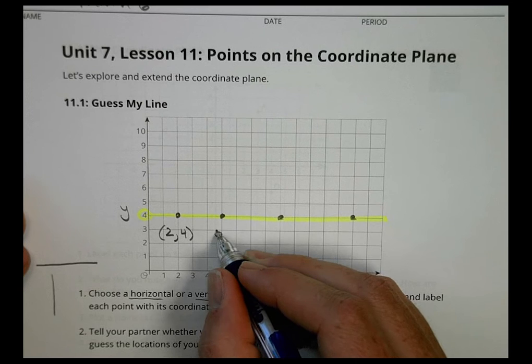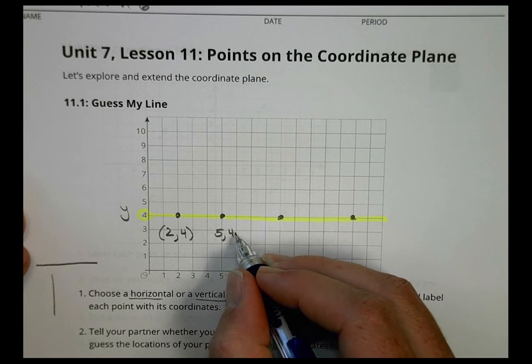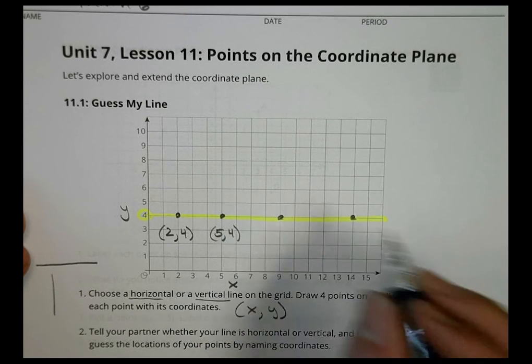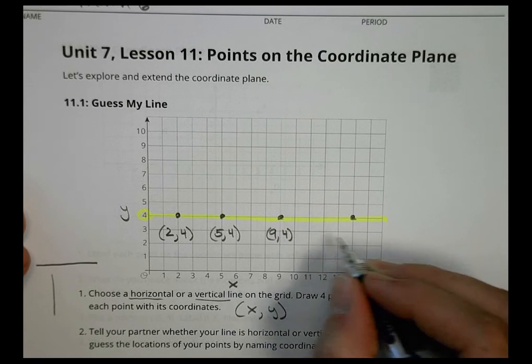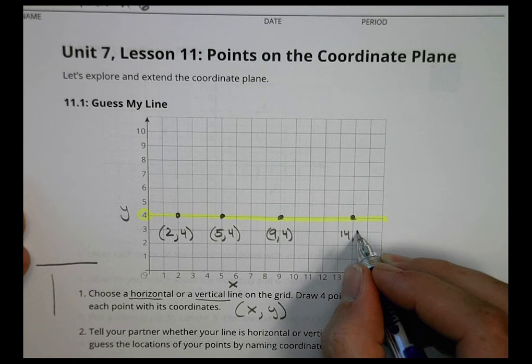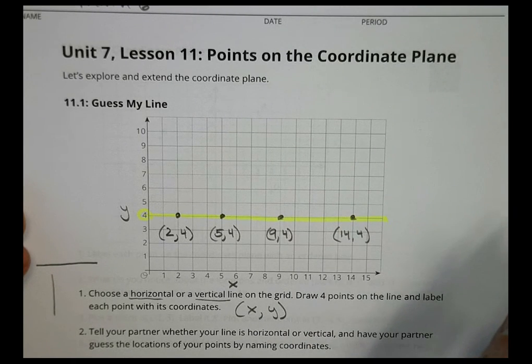For here, my x value is a 5 comma and my y value, because it's in the same horizontal line, is still 4. Here, my x value is 9, my y value is 4. And here, my x value is 14, and my y value is 4.